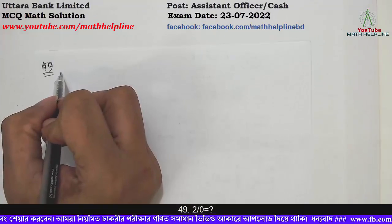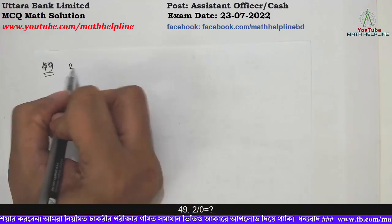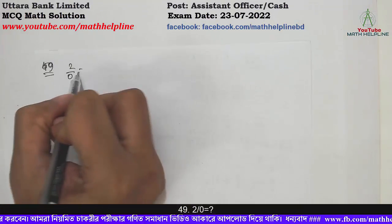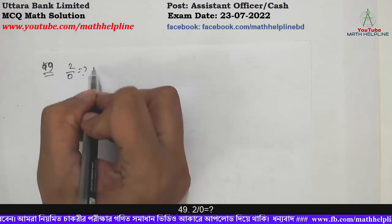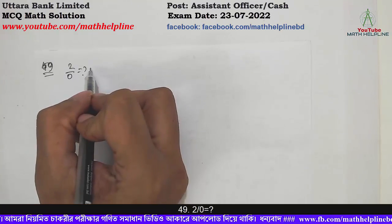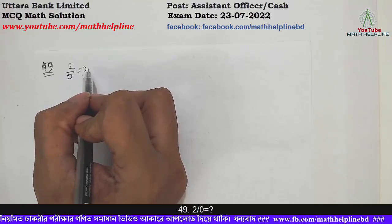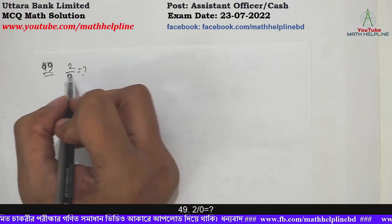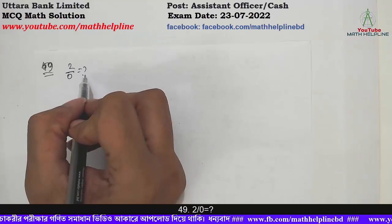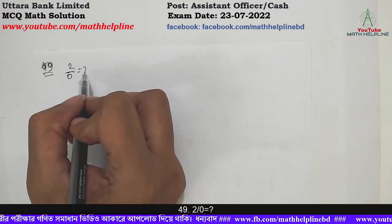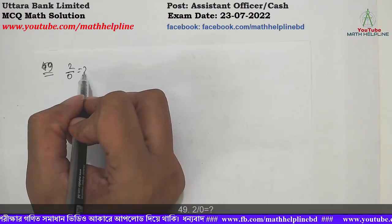Problem number 49: What is 2 divided by 0? 2 divided by 0 is undefined. Automatically, since there is 0 in the denominator, the answer to this problem is undefined.